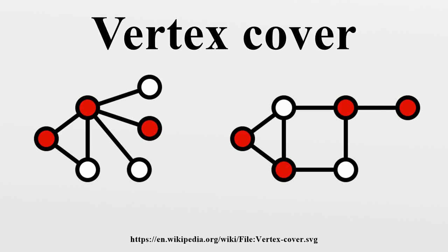In the mathematical discipline of graph theory, a vertex cover of a graph is a set of vertices such that each edge of the graph is incident to at least one vertex of the set. The problem of finding a minimum vertex cover is a classical optimization problem in computer science and is a typical example of an NP-hard optimization problem that has an approximation algorithm. Its decision version, the vertex cover problem, was one of Karp's 21 NP-complete problems and is therefore a classical NP-complete problem in computational complexity theory.